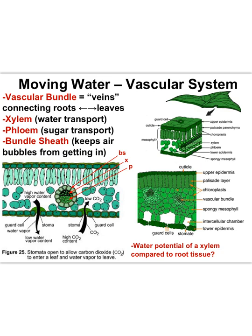There are a few specialized structures to point out: the xylem, the phloem, and the bundle sheath. Together, these three structures are called the vascular bundle. The xylem is responsible for moving water.